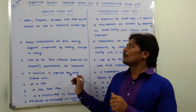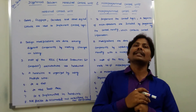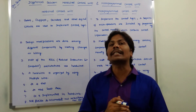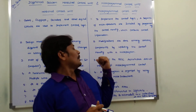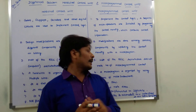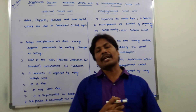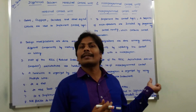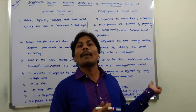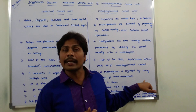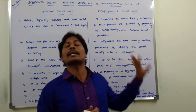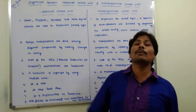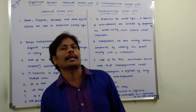The fourth point: in a hardwired control unit, the hardware is organized by using multiple wires between different components. In microprogrammed control unit, a micro-program is organized by using a sequence of micro-instructions. So a micro-program is nothing but a sequence of micro-instructions.